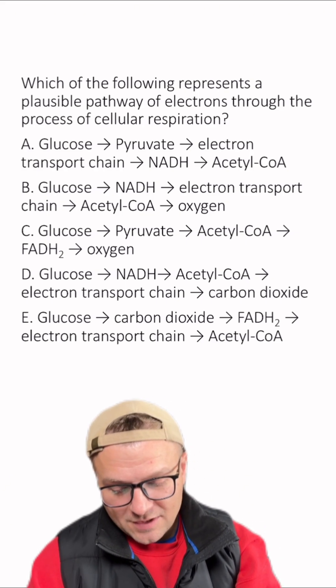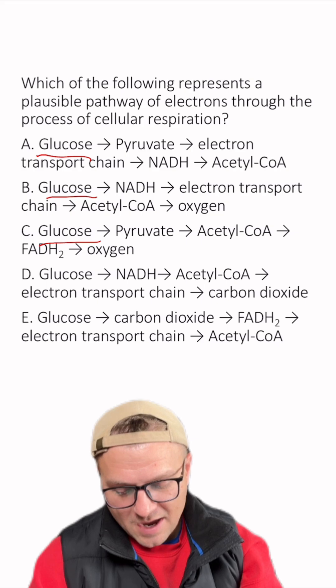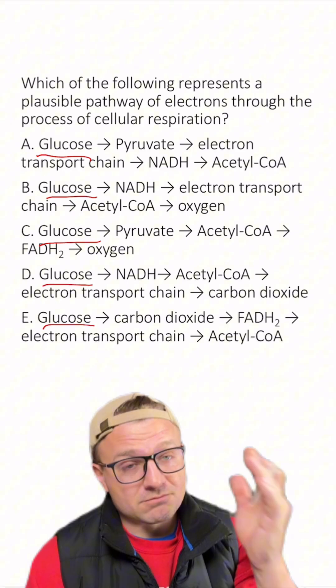If we look at all of the answers, we can see that they all start out with glucose, and that is right. The electrons that are going to flow through cellular respiration start out in glucose.